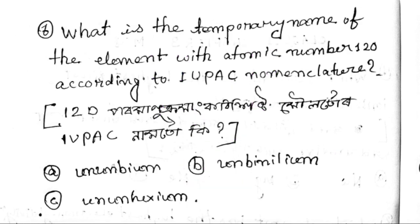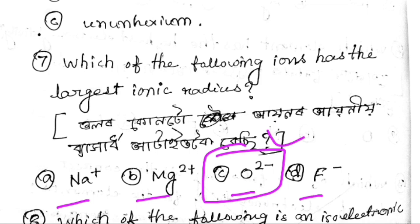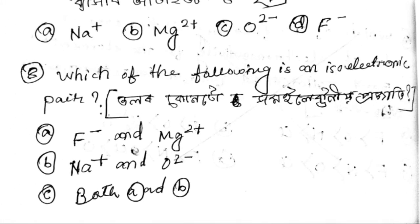Next question: which of the following ions has the largest ionic radius? Next question: which of the following is an isoelectronic pair?